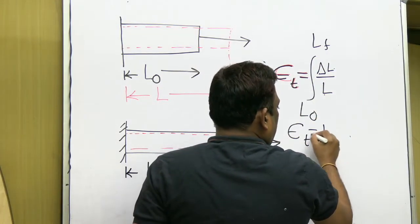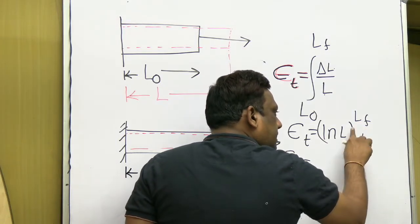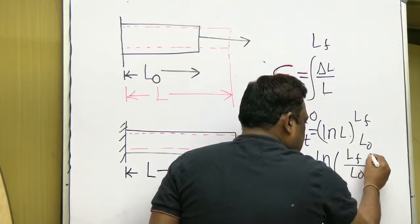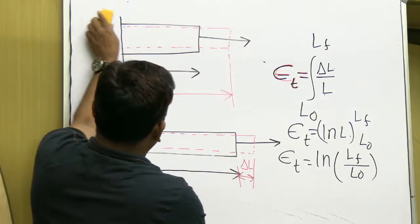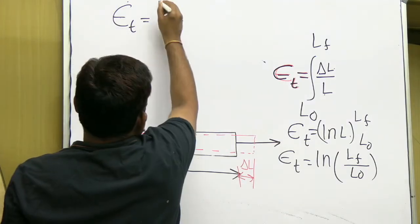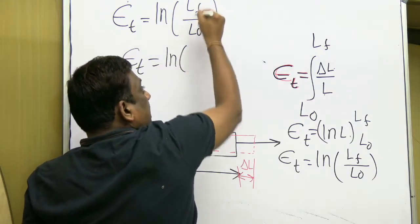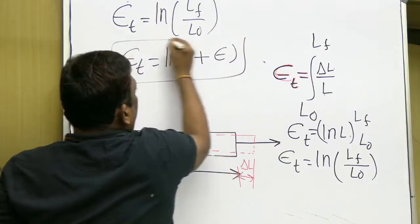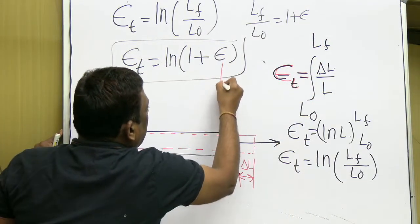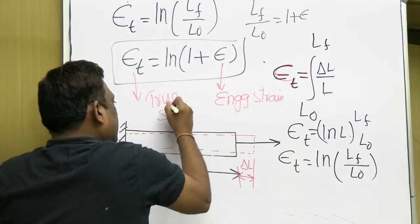Integrating dL/L from L0 to Lf gives ln(L) evaluated at those limits, which is ln(Lf) - ln(L0), or ln(Lf/L0). From equation number one, Lf/L0 = 1 + epsilon. So the true strain epsilon_T equals ln(1 + epsilon), where epsilon is the engineering strain and epsilon_T is the true strain. This is the relationship between true strain and engineering strain.